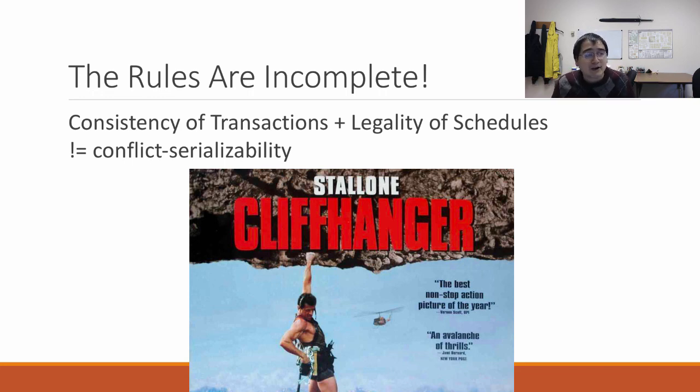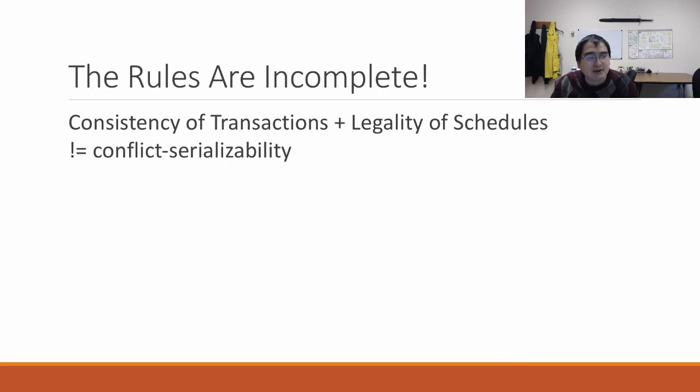And that is where I'm going to leave you for this week on this horrible cliffhanger. You'll have to tune in next week to learn how to actually make sure that by using consistency of transactions, legality of schedules, and one more component that you will actually get conflict serializability. You'll actually be able to make sure that those evil schedules like this aren't actually possible.